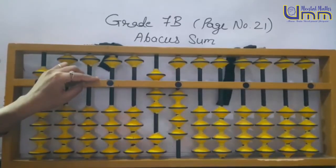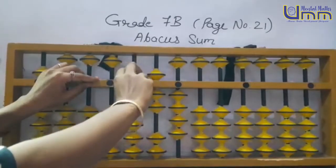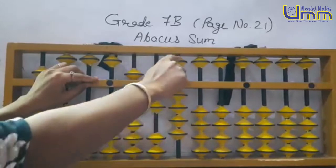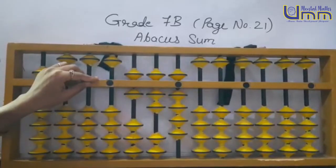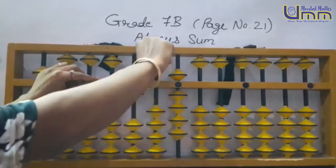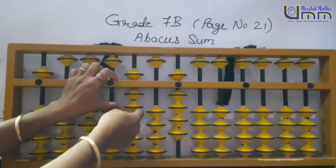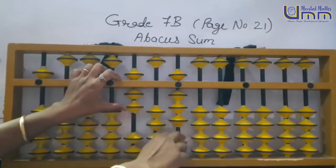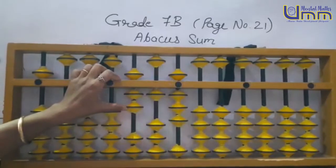605: 6, 0, 5. Then 39: 30 ke liye minus 7 plus 10; 9 minus 1 plus 10.